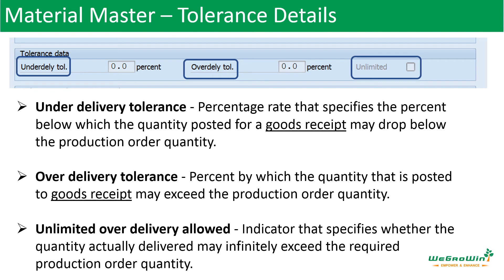Then we have the tolerance details. Under-delivery tolerance is the percentage rate specifying how far below the production order quantity the goods receipt quantity may drop. Over-delivery means the percentage by which the goods receipt quantity may exceed the order quantity. Unlimited means the quantity actually delivered may infinitely exceed the required production order quantity. The normal suggestion is to have a fixed 5 or 10 percent for over-delivery, and it is suggested not to use unlimited — there should be some limit. Under-delivery depends on the production process and the product being produced.